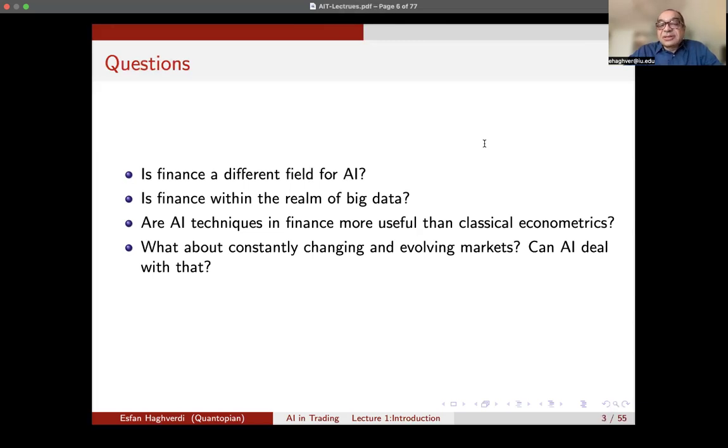What about constantly changing and evolving markets? Markets are constantly changing. They are evolving. Many of you have heard about adaptive market theory and hypotheses. So these regime changes are things that may challenge AI. And if so, how can the tools that we're using adapt to that kind of evolving and constantly changing markets? And in particular, also constantly changing maybe buyer and seller behavior.